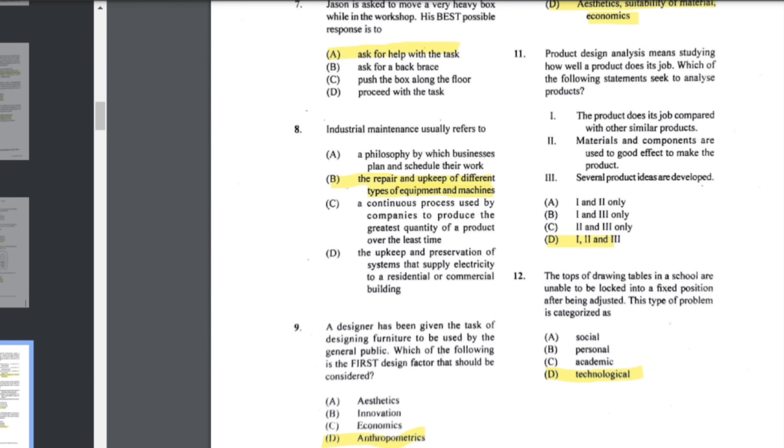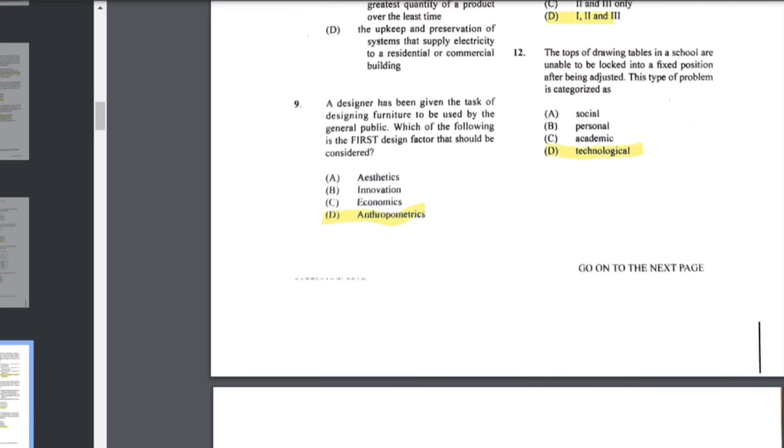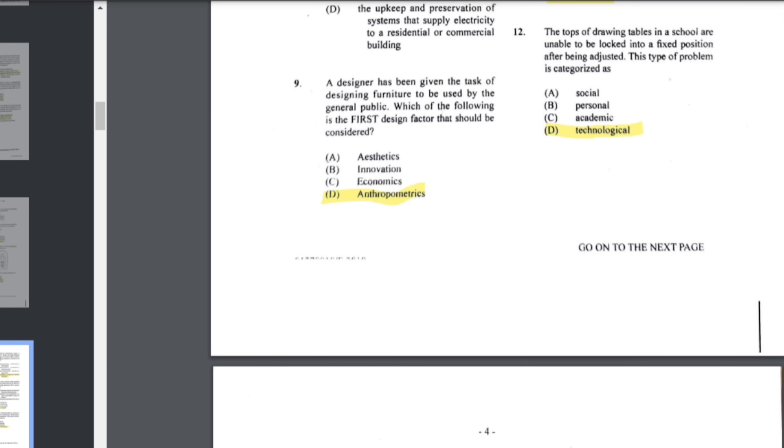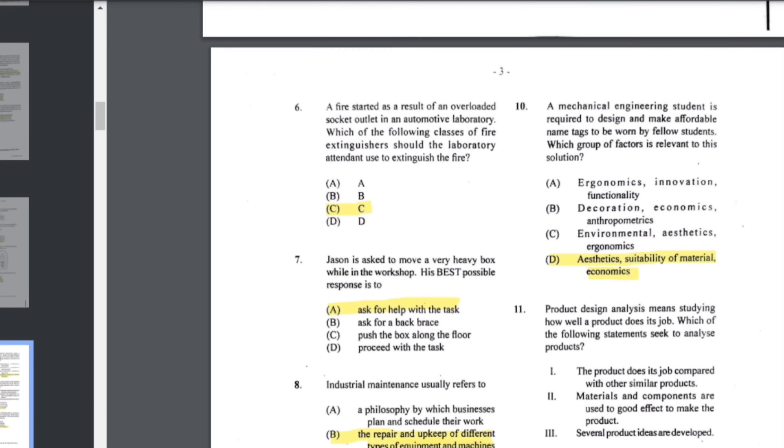Industrial maintenance usually refers to the repair and upkeep of different types of equipment and machines. Number nine: a designer has been given the task of designing furniture to be used by the general public. Which of the following is the first design factor that should be considered? For this one, we would have to think about anthropometrics, and the reason for that is that anthropometrics is basically the study or the science of measuring the size and proportions of the human body. Since we are going to be doing it for the general public, that is what we have to take into consideration before anything else.